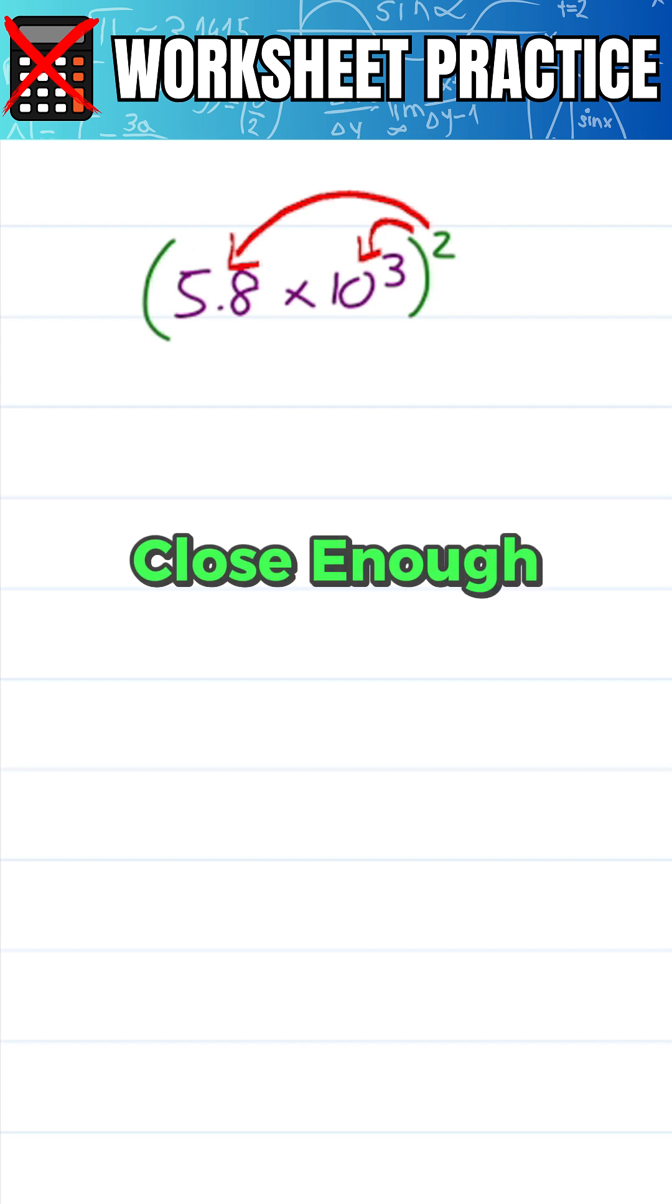Without a calculator, close enough is good enough, and so we'll say that 5.8 is approximately 6. This gives me a simple problem that you can absolutely do in your head.